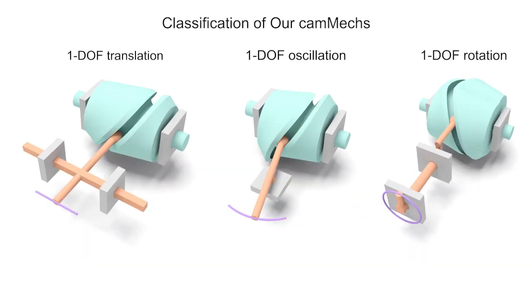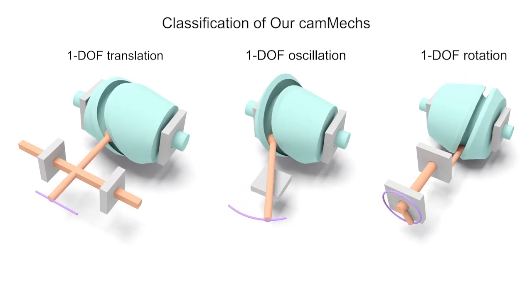Our cam mechs can also control three kinds of one DOF motions: translation, oscillation, and rotation.